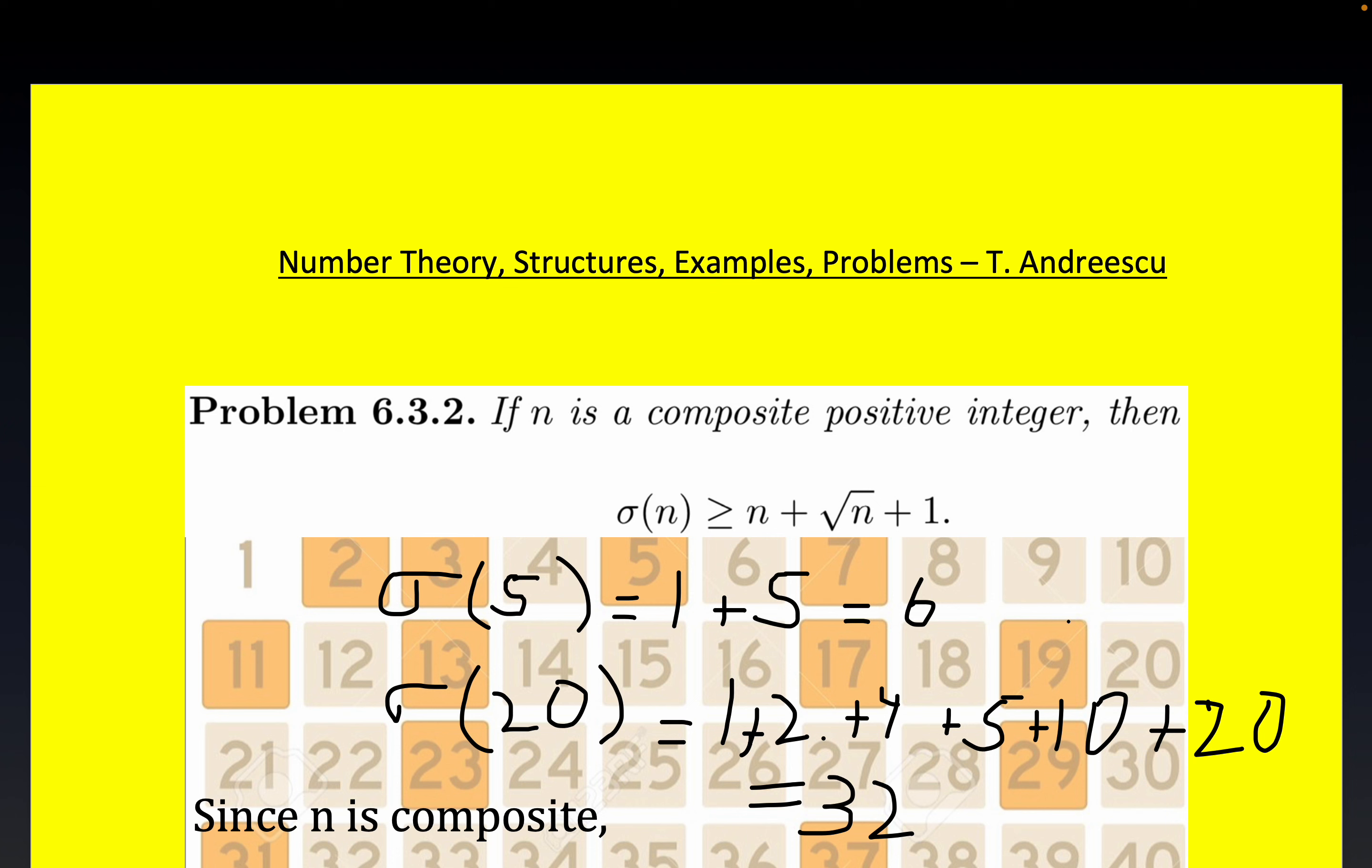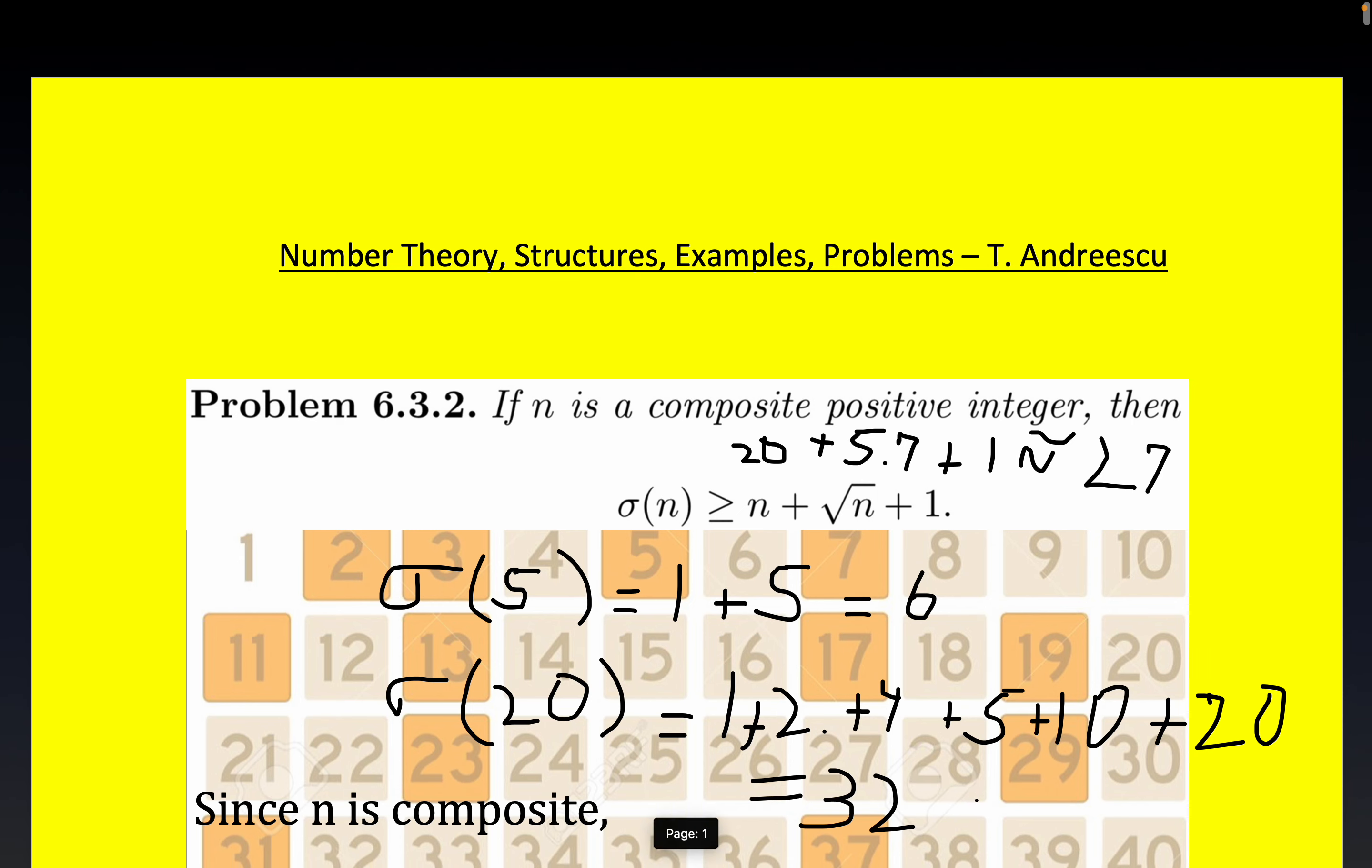Now notice right here for this particular problem, we would have 20 plus, the square root of 32 is somewhere between five and six, right? Somewhere between five and six, so we'll say just approximately 5.5. 32 is between 25 and 36, and so maybe 5.7, plus one, and since we're in a rounding kind of mood today, this would be approximately 27. So you see what I mean by crude? Our lower bound gives you 27, but it's actually 32 in this case. But let's go ahead and see why this is true.